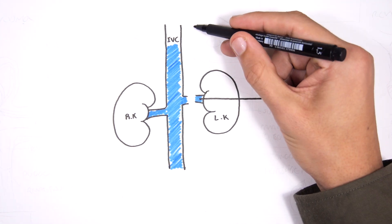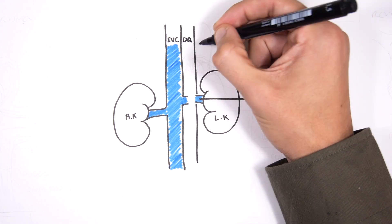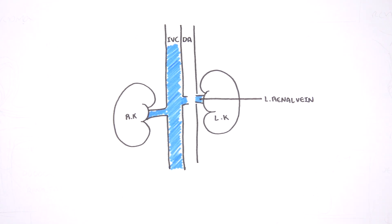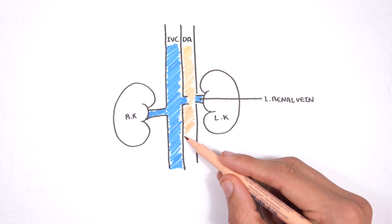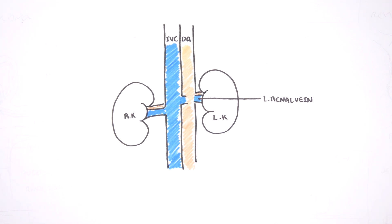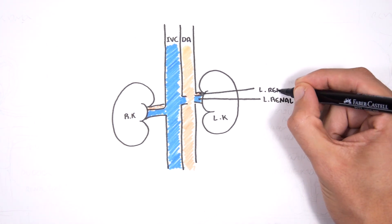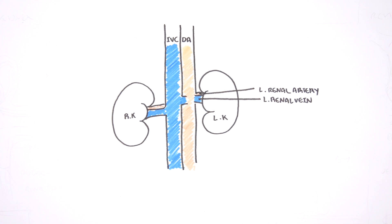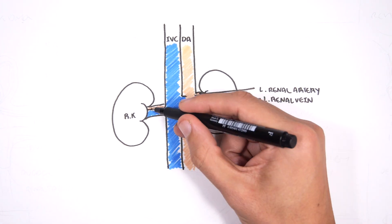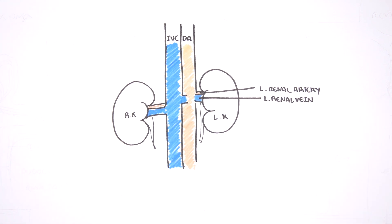Behind the inferior vena cava you have the descending aorta. The descending aorta has branches called the renal arteries. Here is the left renal artery. The renal arteries sit behind the renal veins and then behind the renal artery you have the ureter.